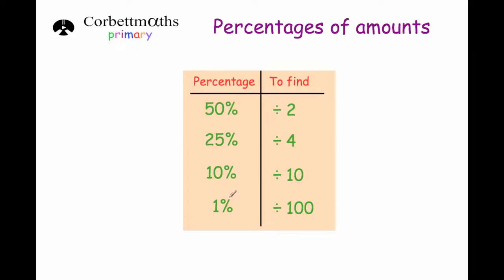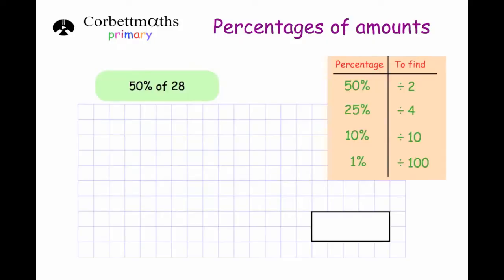With these four building blocks you can work out any percentage. For instance, if you wanted to work out 20% you could get 10% and add it to itself, and so on. Let's have a look at some questions now.